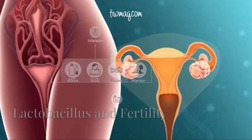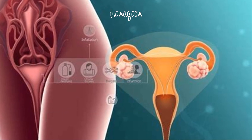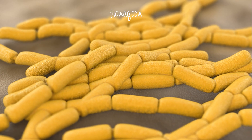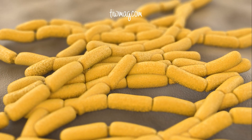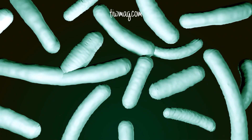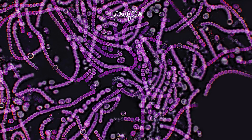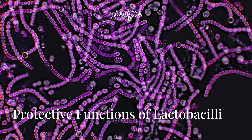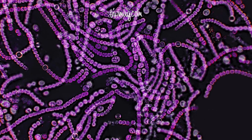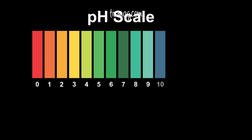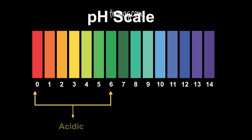A genital lactobacillus dominated flora plays a pivotal role in determining fertility and, in particular, Lactobacillus crispatus. Lactobacilli dominate the microbial community and are commonly associated with a healthy genital status. Lactobacilli produce lactic acid and protect the vagina by maintaining a low pH that is prohibitive to the growth of most pathogenic bacteria.